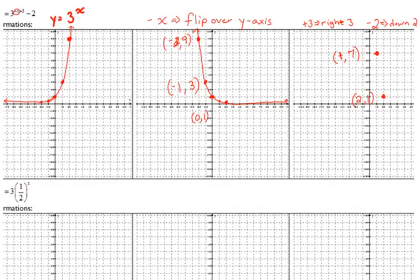The point (0, 1) moves right 3 to give us (3, 1), then down 2, so now we're at (3, negative 1). The point (1, 1/3), moving right 3 puts us at x equals 4, y is 1/3, then down 2 — it's a little harder to move the fractions, but getting the general area there.